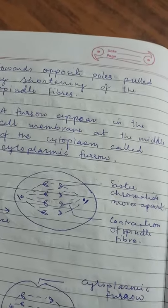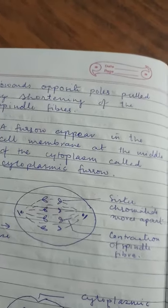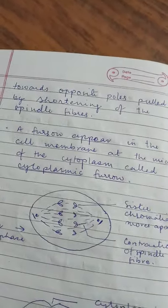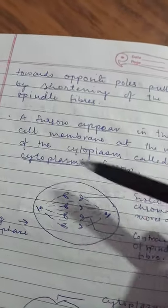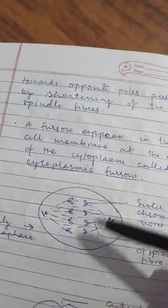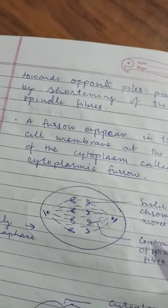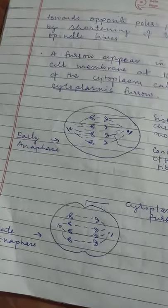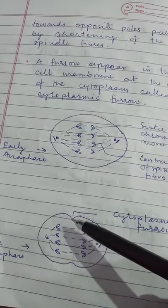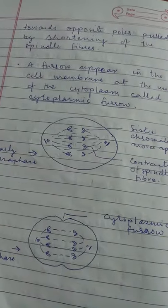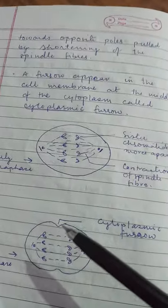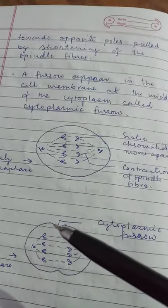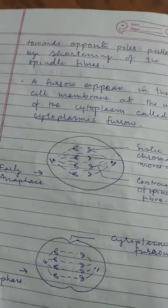The sister chromatids move towards the opposite poles due to the shortening of the spindle fiber. When the spindle fiber that attaches the centromere of the chromosome starts contracting, the centromere splits and the chromatids move towards the poles. This movement of chromatids towards opposite poles is the remarkable feature of anaphase. Another feature in anaphase is the appearance of a cytoplasmic furrow in the cell membrane.